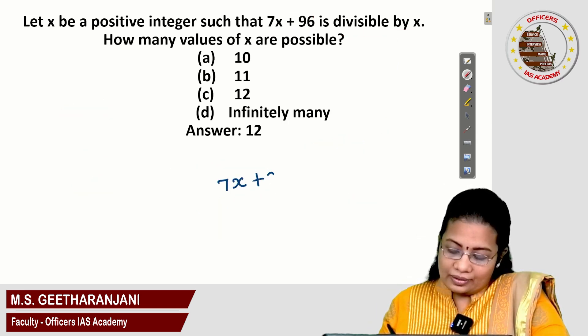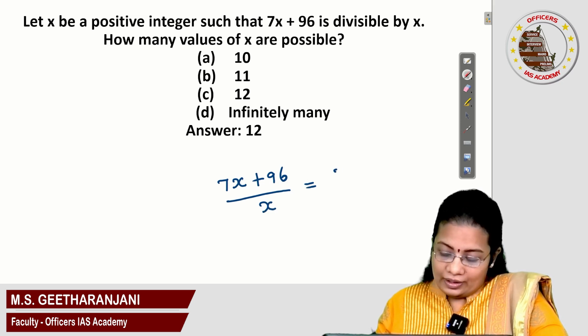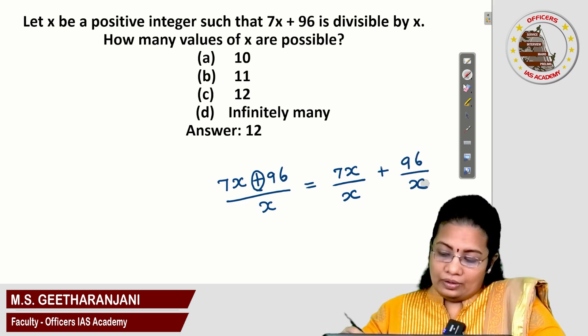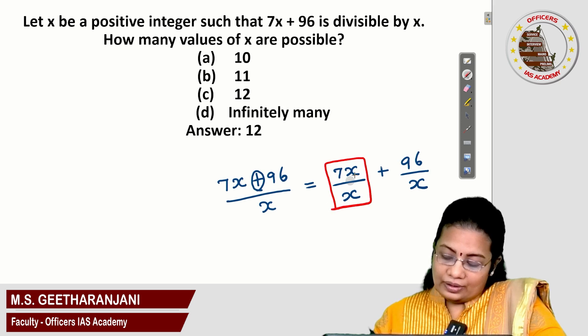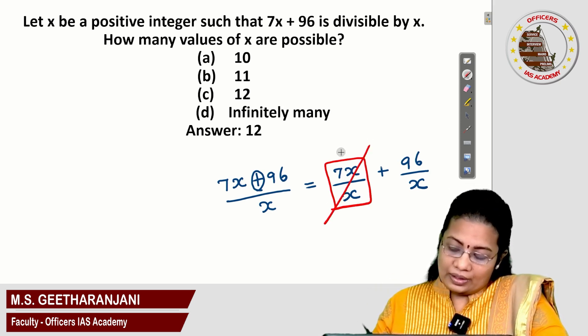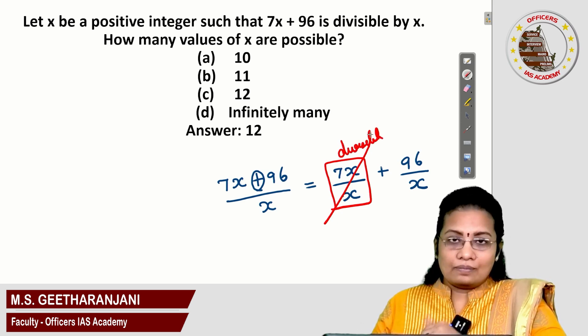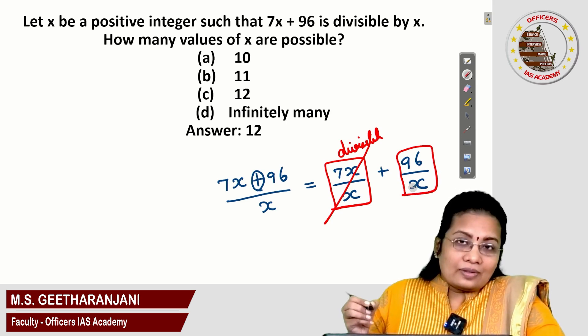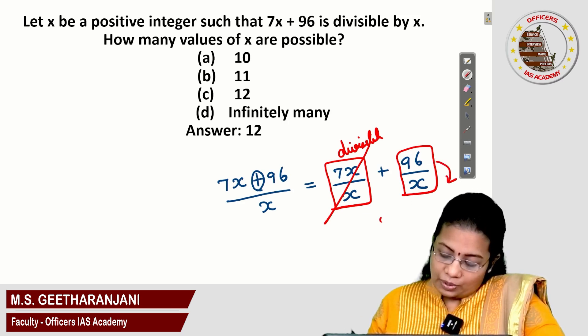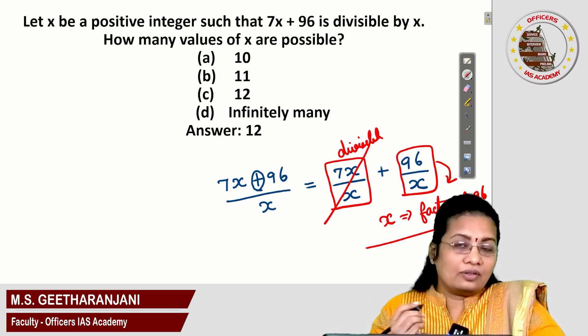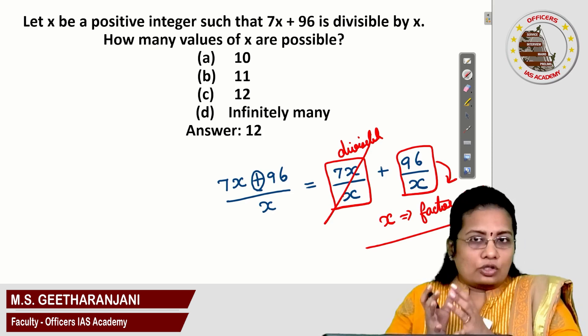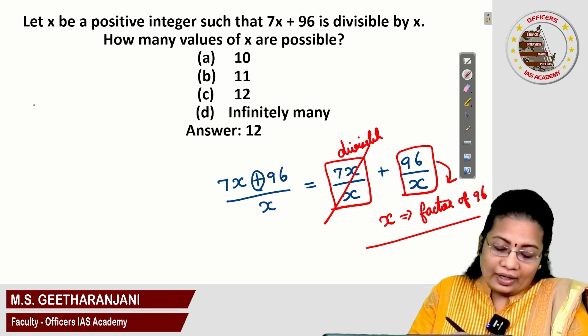When 7x plus 96 is divisible by x, we can take 7x separately, plus 96 by x. Here 7x by x, x and x got cancelled. This number is divisible by x because 7x is a multiple of x. What about this 96 value? While x is divisible in 96, x must be the factor of 96. Let us find what are the factors of 96. Those all factors may be the value of x, so that much possibilities x will have.